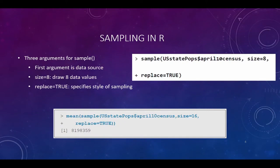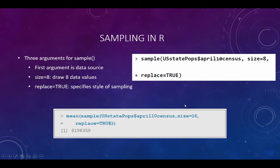You create a sample by using the keyword `sample` with three different arguments. The first argument is the data source — that is going to be your full population of data. As you can see in the example, we're sending it an entire column from the U.S. state population census we've been working on. The second argument is the sample size — in this example, I want eight, so it's going to draw eight data values. When you look at the bottom example and say `size = 16`, that means it's going to pull 16 values.